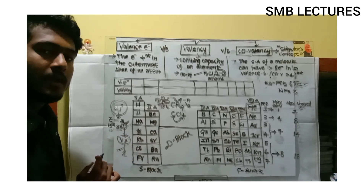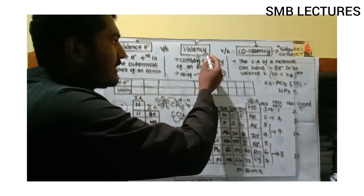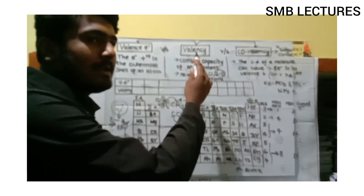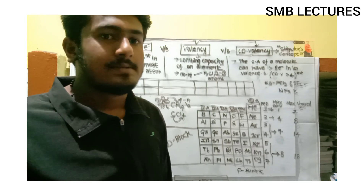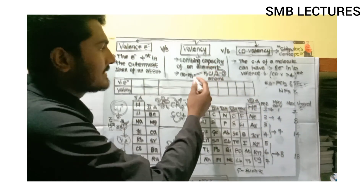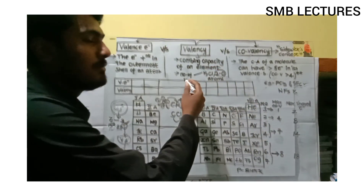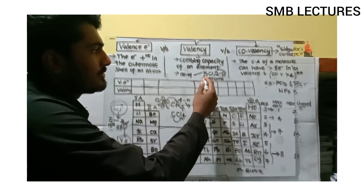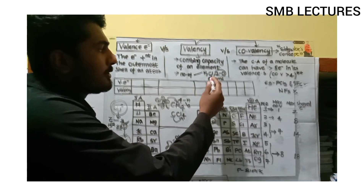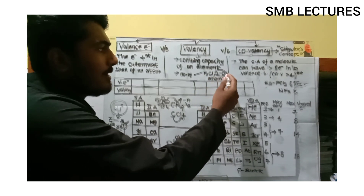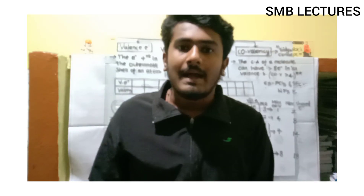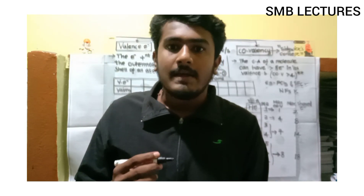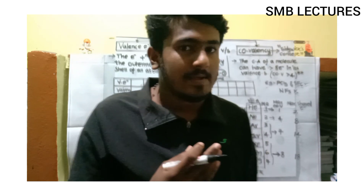Next, what is valency? The combining capacity of an element is known as valency. It can also be expressed as the number of hydrogen atoms, the number of chlorine atoms, or double the number of oxygen atoms which combine with an atom of another element.